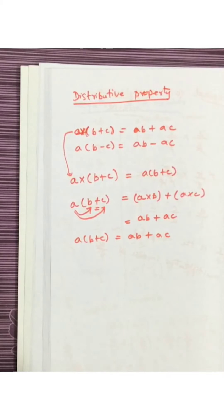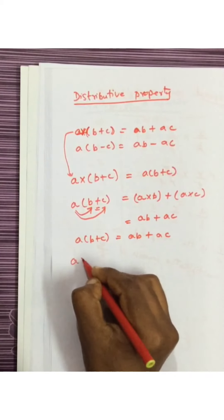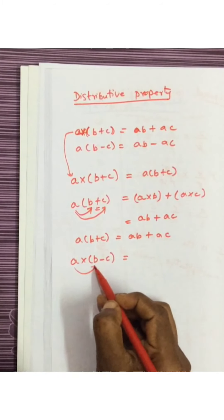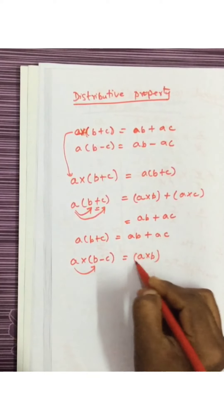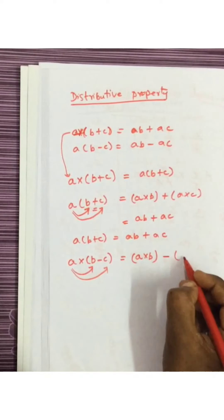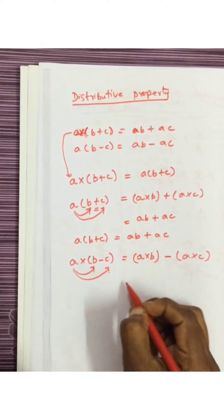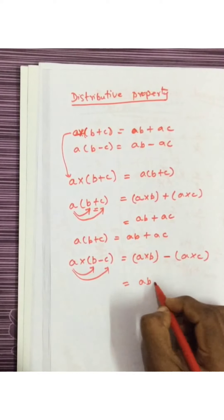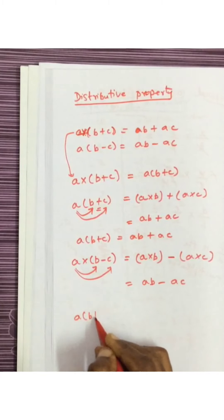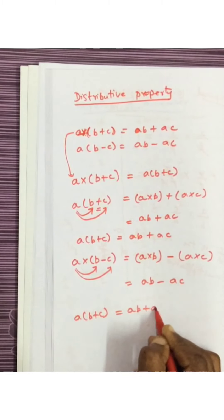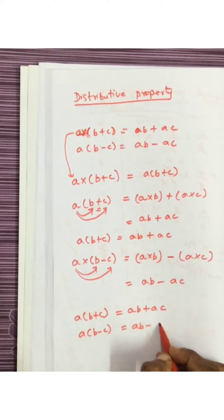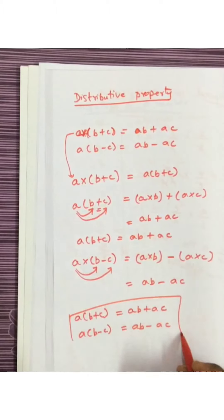This is for addition. For subtraction the same thing: A multiplied by B minus C. First this A should get multiplied with B, which is A multiplied by B. Then the minus comes and then A multiplied by C. So A multiplied by B is AB, minus A multiplied by C is AC. This is the distributive property: A into B plus C equals AB plus AC, and A into B minus C equals AB minus AC.